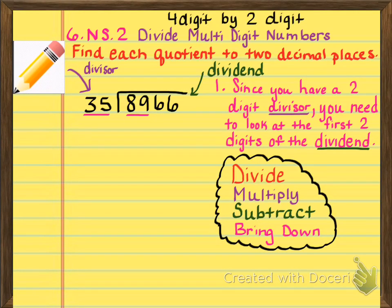And then we've got find each quotient to two decimal places. I do want you to add the four-digit by two-digit. So as you can see at the top, I've added four-digit by two-digit. That's so that you know what the parameters are for this video because there will be three separate videos in this segment so that you know how to divide all of the numbers that you're going to need for your assessment.